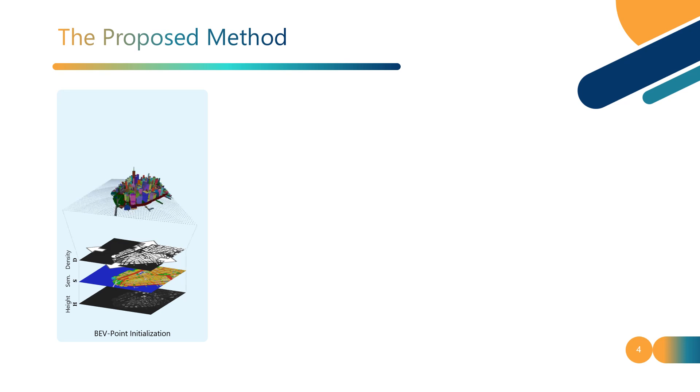The binary density map is introduced to control the sampling density for different semantic categories. This is driven by the observation that certain categories exhibit simpler textures, allowing for reduced density to manage computational costs.